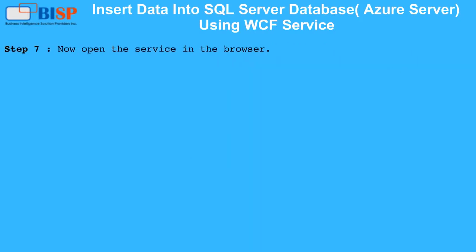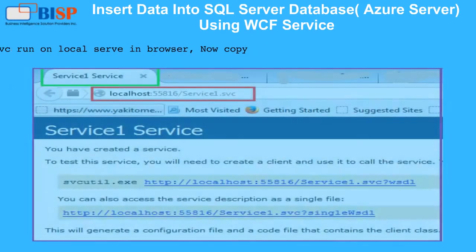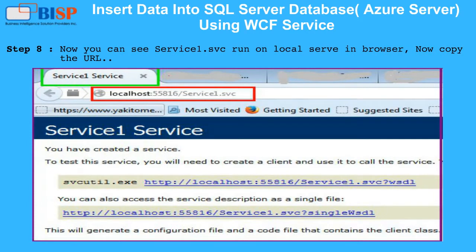Step 7: Open the service in the browser. Right-click on service1.svc and click on Open in Browser. Step 8: You can now see service1.svc running on the local server in the browser. Copy the URL.